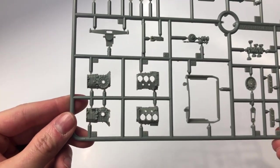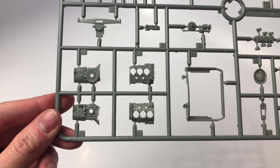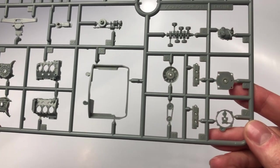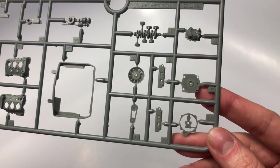On this sprue, we see most of the remaining parts for the engine. We also see the transmission and the engine stand can be found on the top left of the sprue.